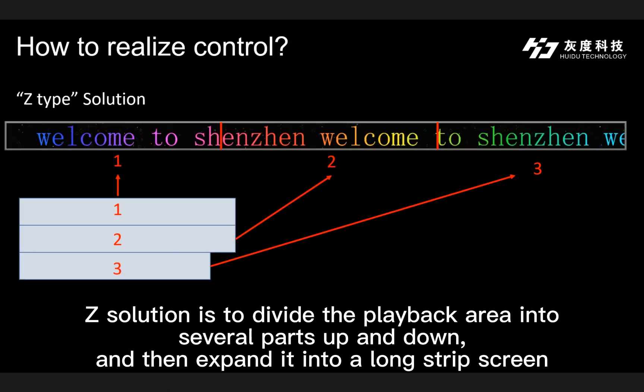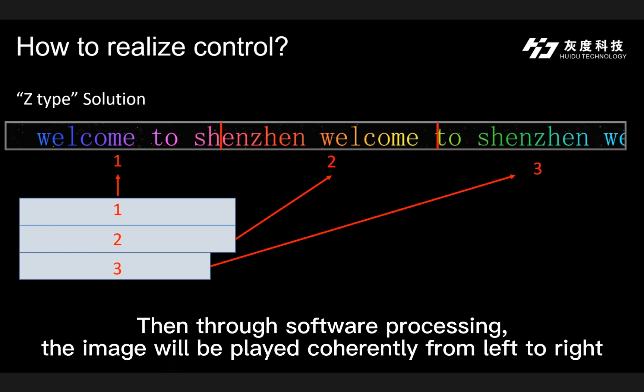The Z-solution is to divide the playback area into several parts top and bottom, and then expand it into a long strip screen. Then through software processing, the image will be played coherently from left to right.